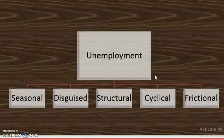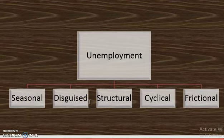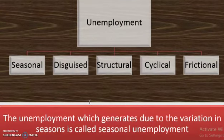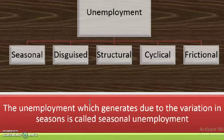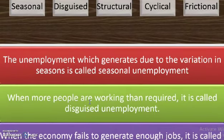Types of unemployment include: seasonal, disguised, structural, cyclical, and frictional. Seasonal unemployment and disguised unemployment may have been studied in earlier classes. Seasonal unemployment occurs due to variation in season — for example, people occupied in harvesting crops become unemployed after the harvesting season ends.